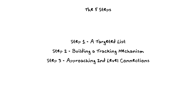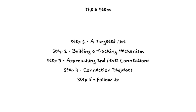Step number three is starting to approach second-level connections via your first-level connections. Step number four is making connection requests with people that you don't have a good way to get into otherwise. And last but not least, step number five is having a follow-up process — put something in place that allows you to follow up with people on a fairly consistent basis.